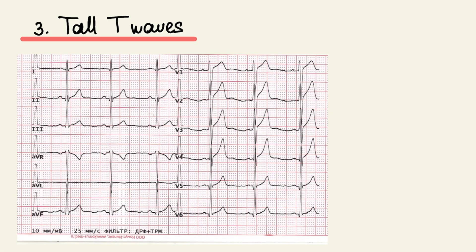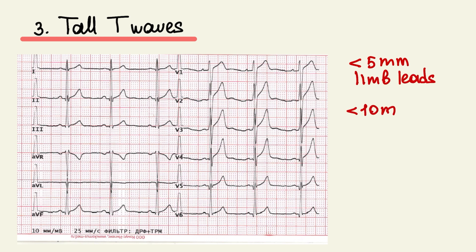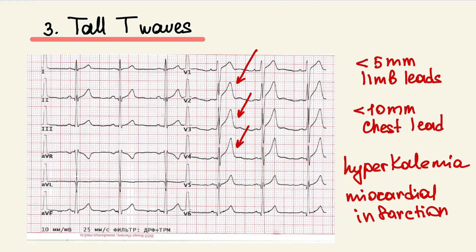The amplitude of the T wave can be less than 5 mm at limb leads and less than 10 mm at chest leads. But tall T waves at chest leads are normal for young people as well. Remember, tall T waves can also be found in hyperkalemia and at the early stage of myocardial infarction, so we always need to interpret ECG with the clinical situation.